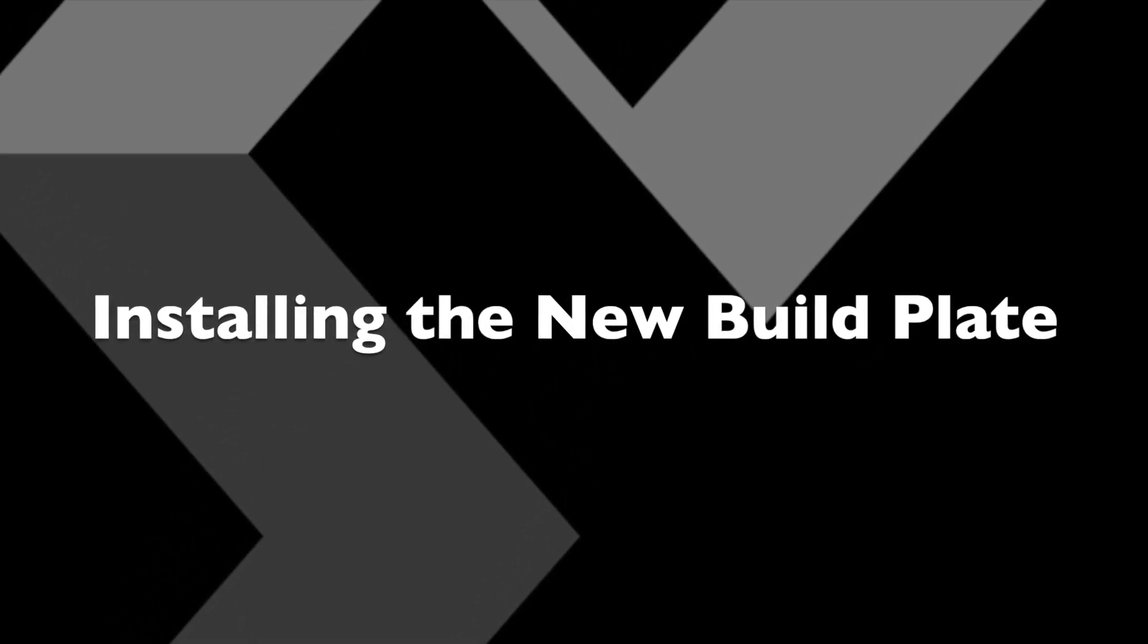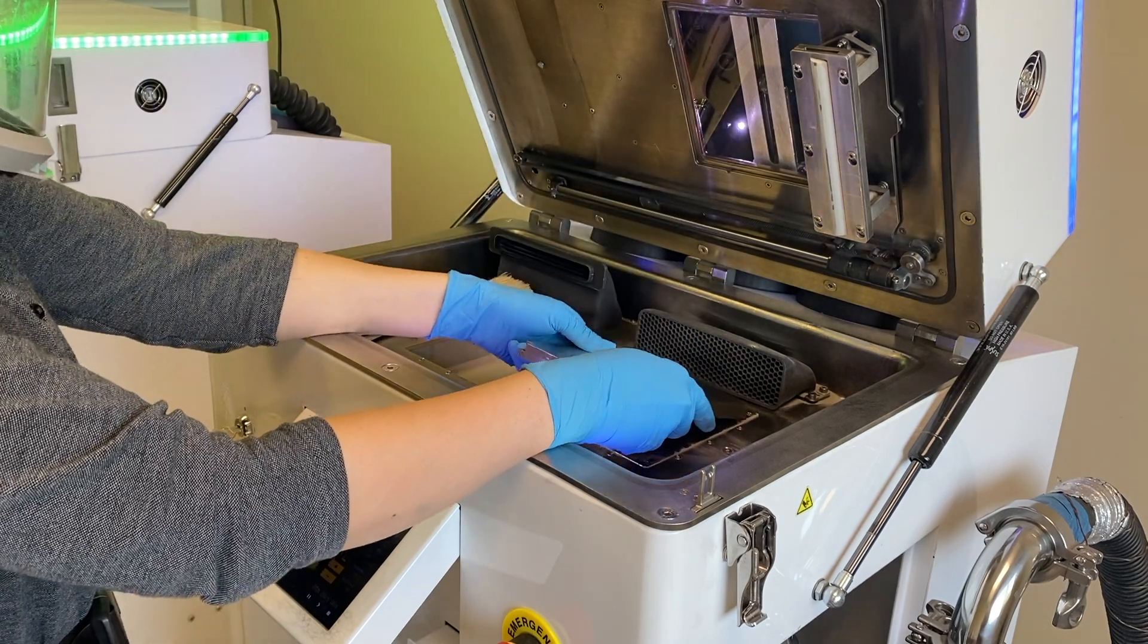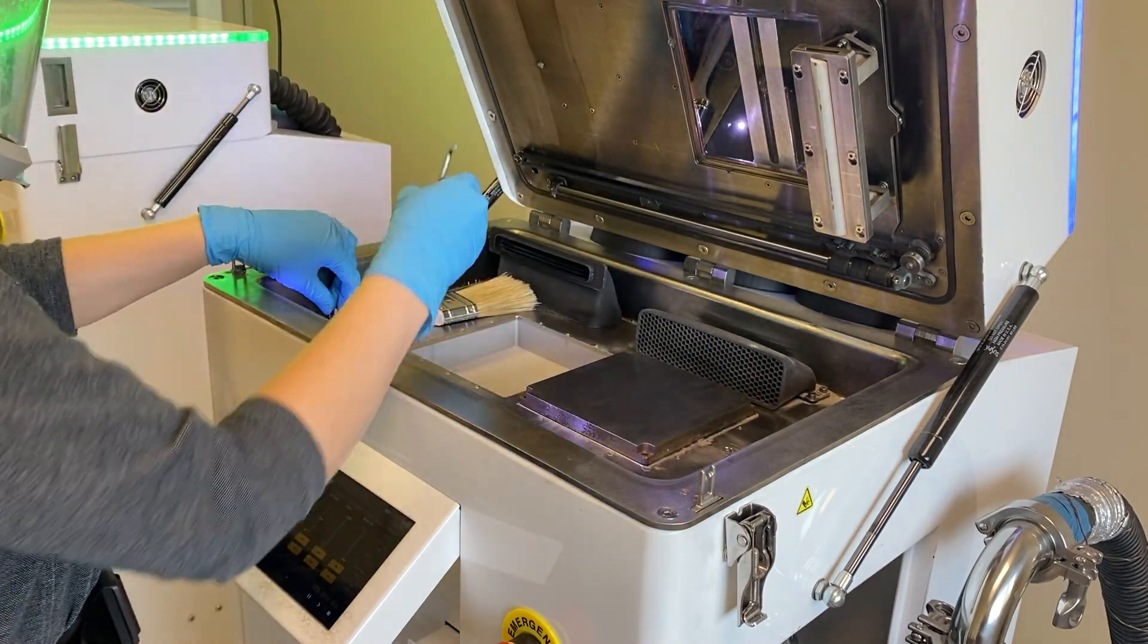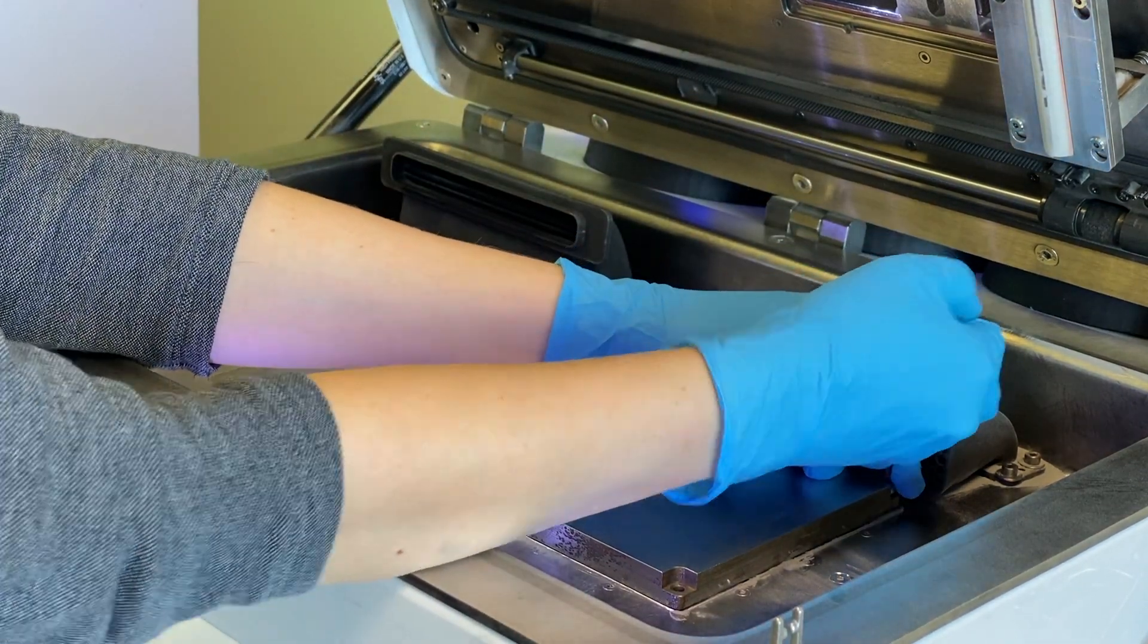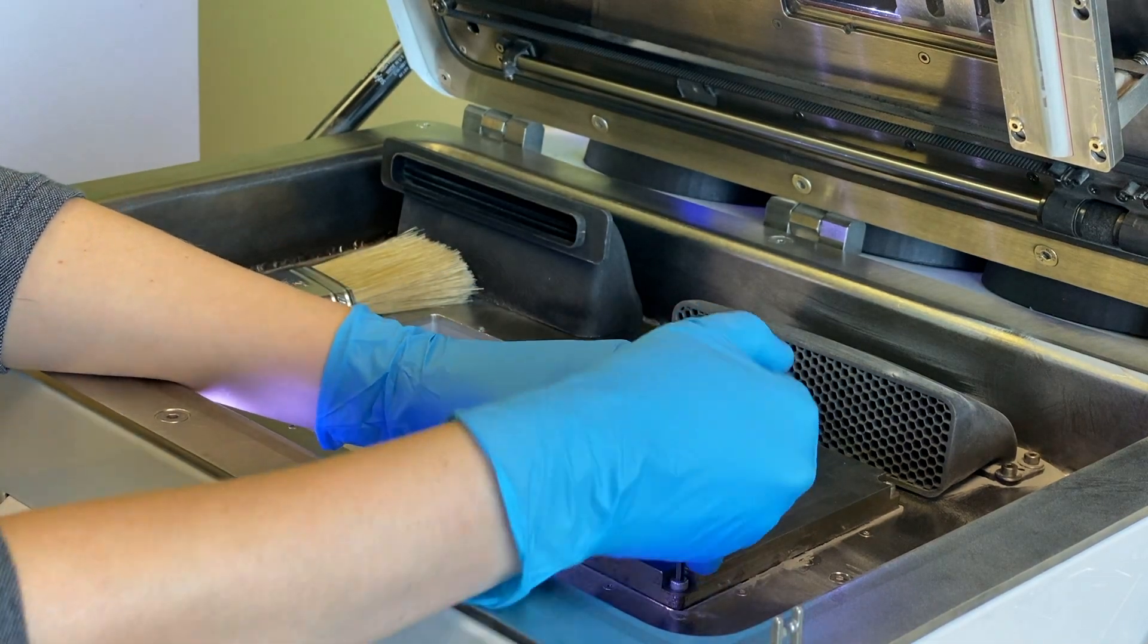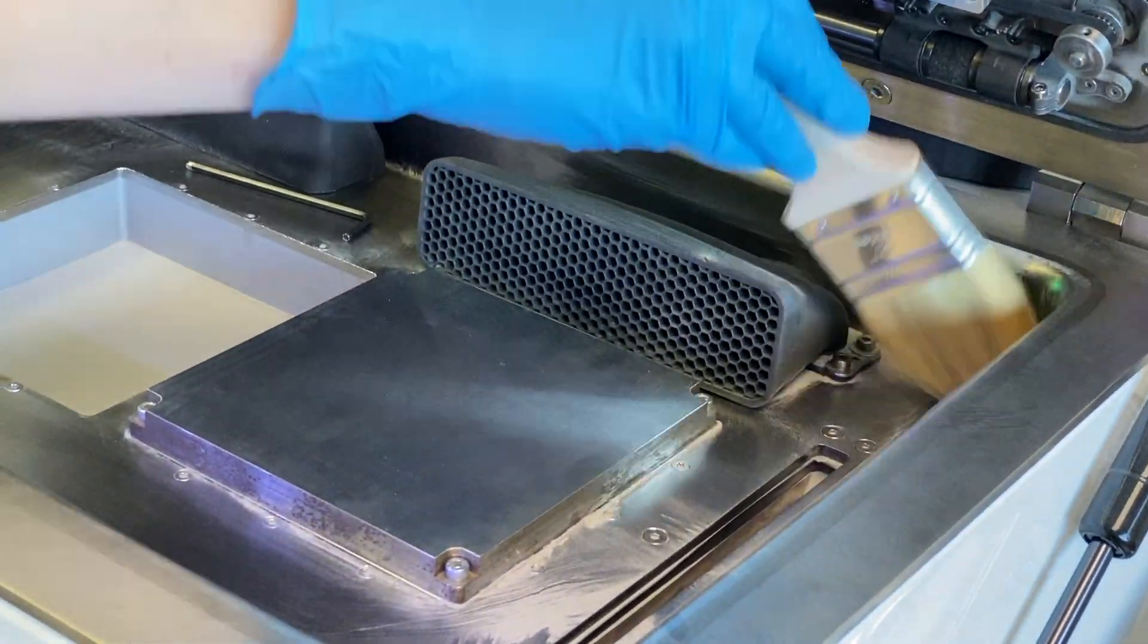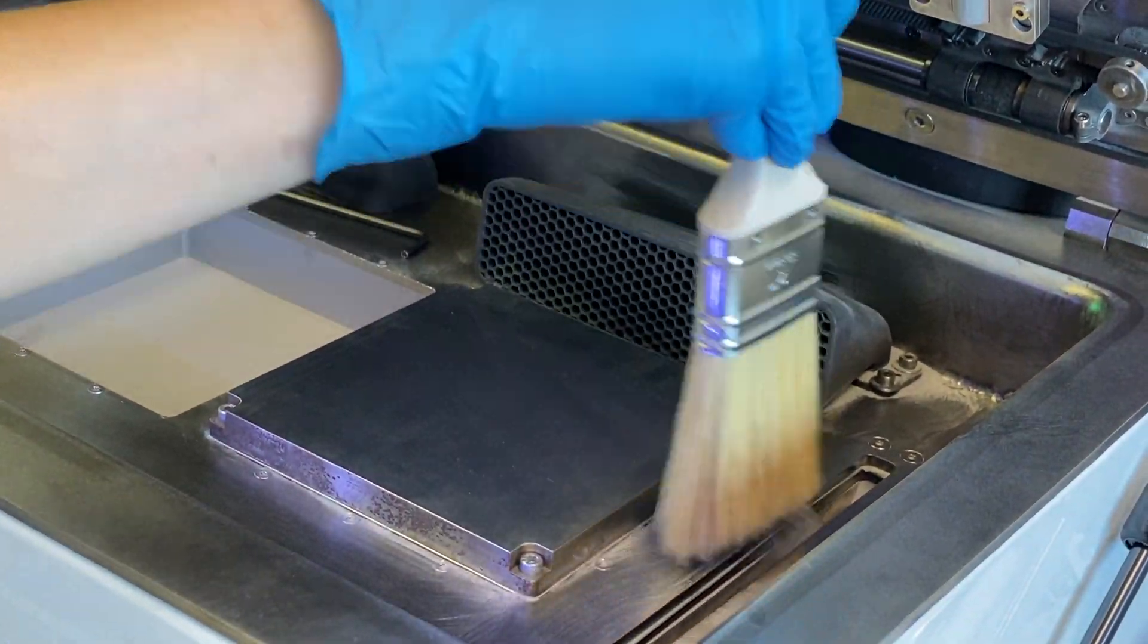Now we're ready to install a new build plate. Simply put in the new build plate and screw it down with all four screws. Once all four build plate screws are installed, we can remove any excess powder from the build area.